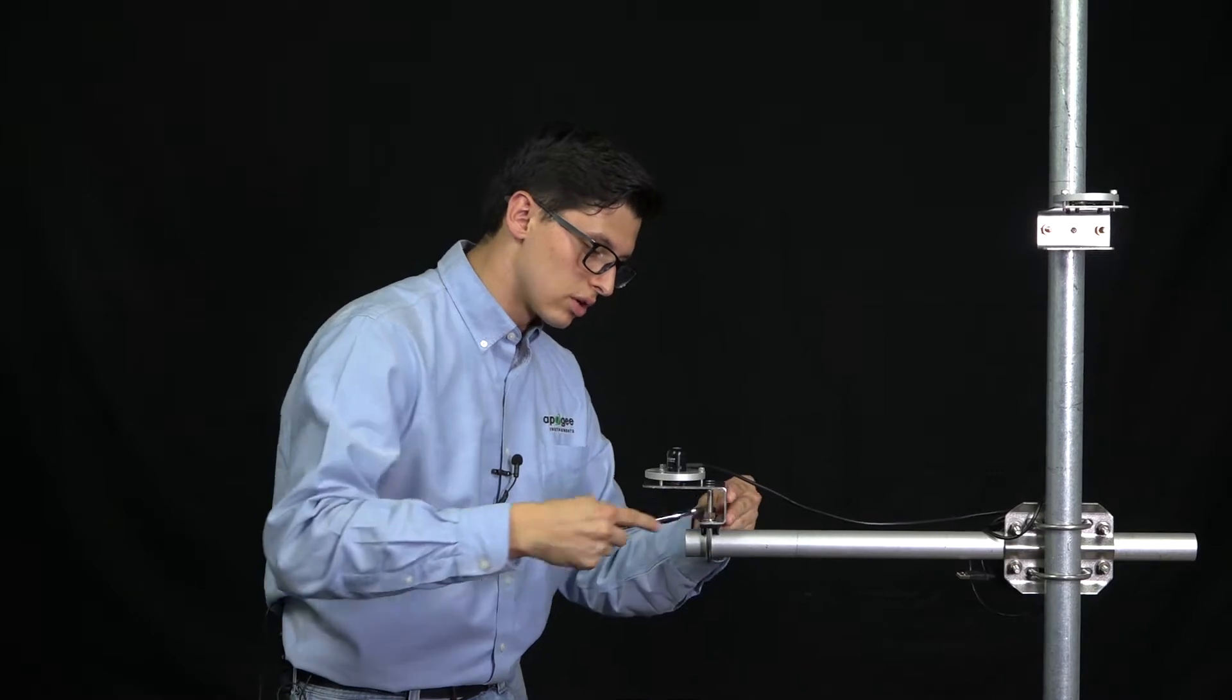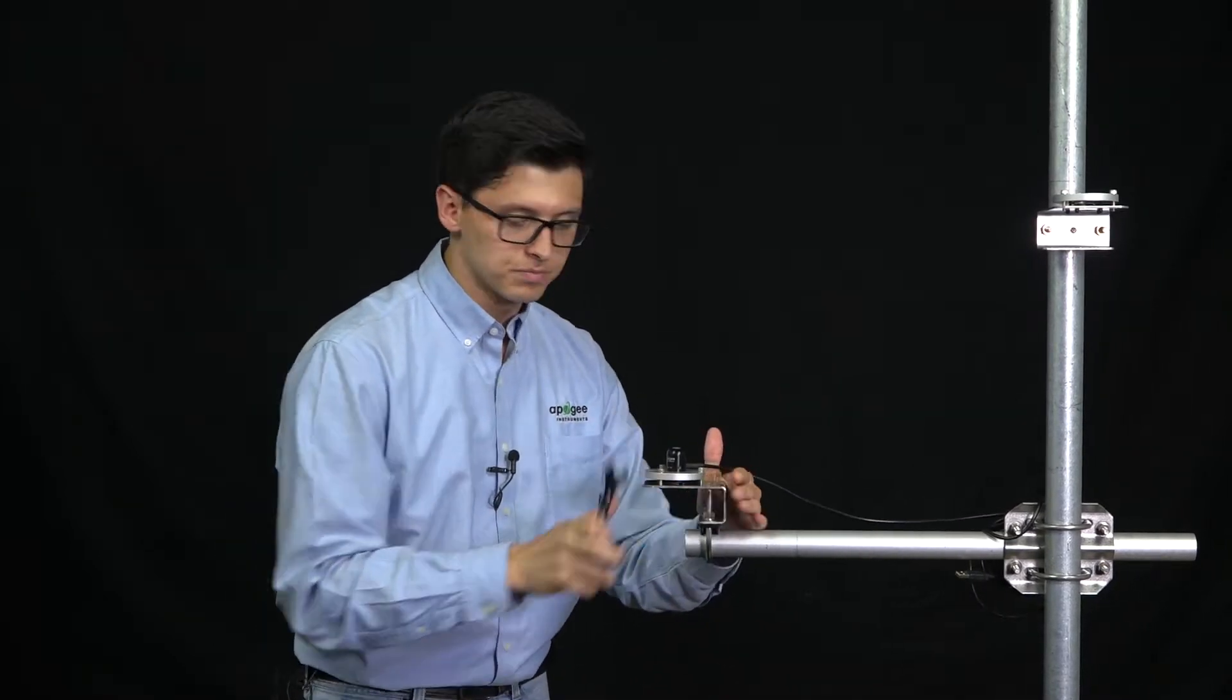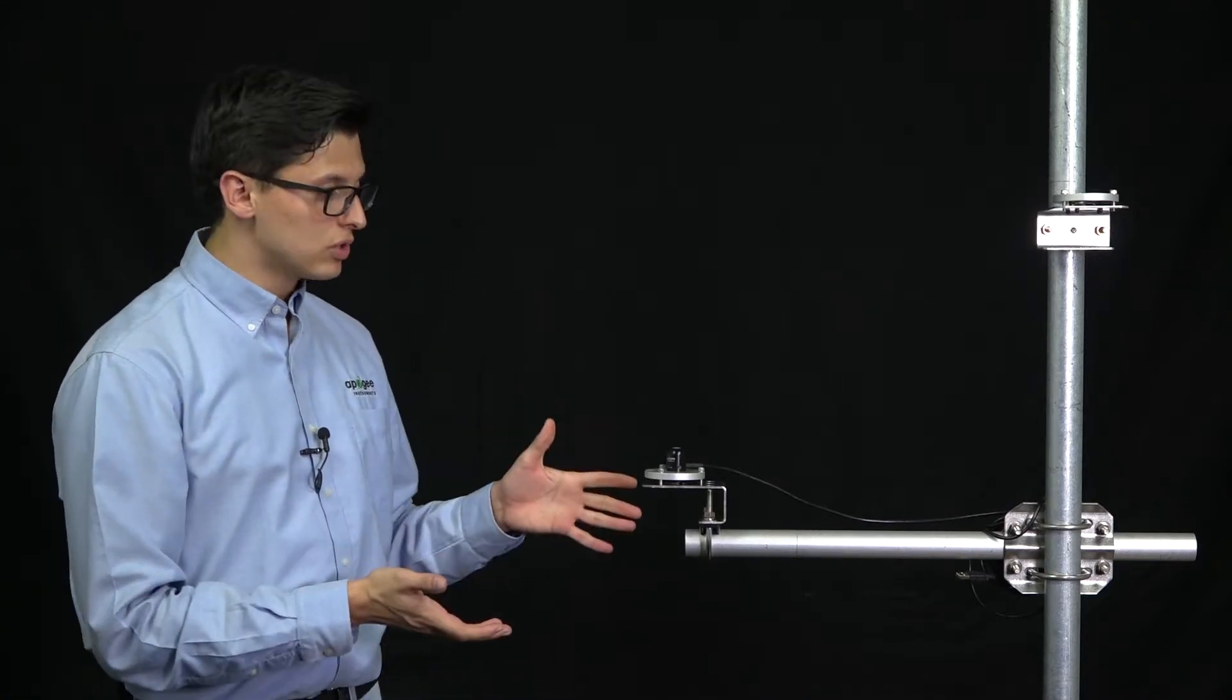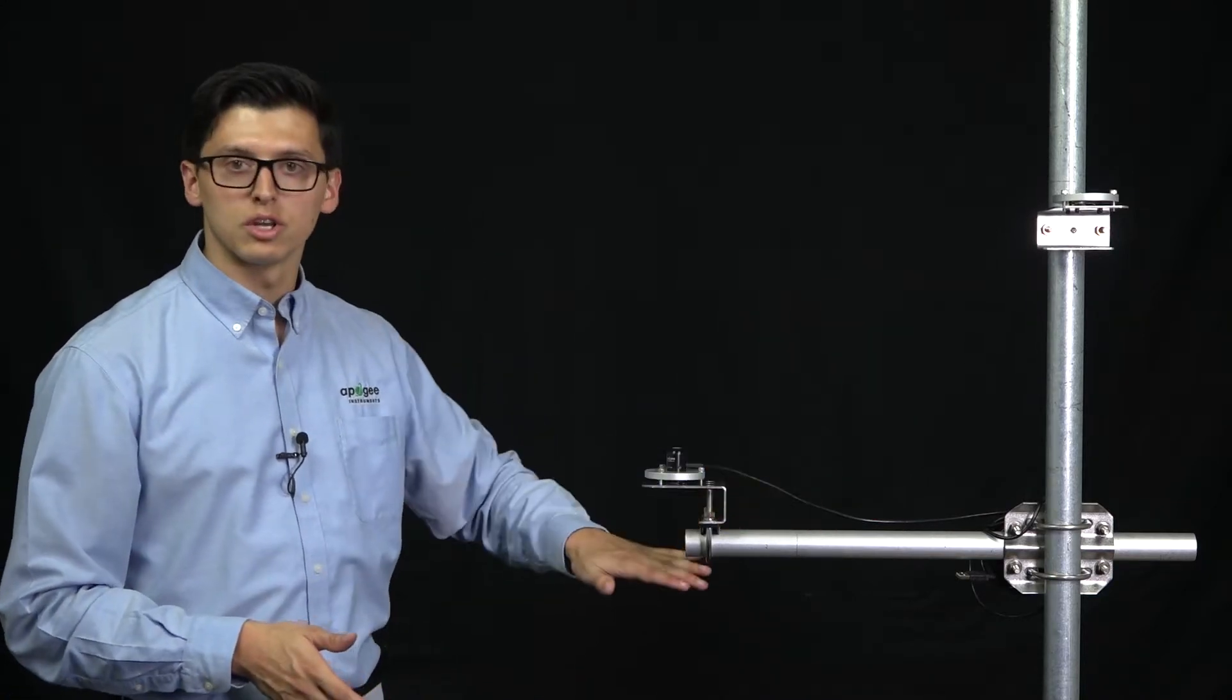After a few turns, you should have it in place. Excellent. And there you have it. Now our AL120 is mounted on a horizontal cross arm.